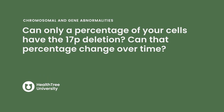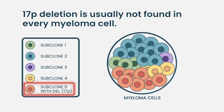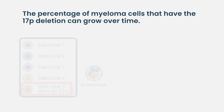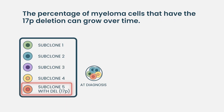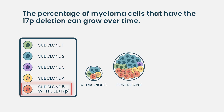Can only a percentage of your cells have the 17P deletion, and can that percentage change over time? The 17P deletion doesn't have to be in every single myeloma cell — in fact, most of the time it's not. It's usually in a small percentage of the myeloma cells. For people who have had 17P deletion from the beginning, we might find a smaller percentage initially, but that percentage grows over time.